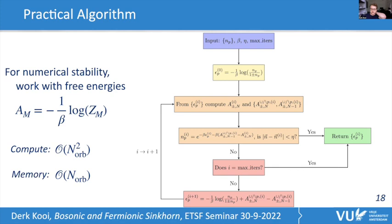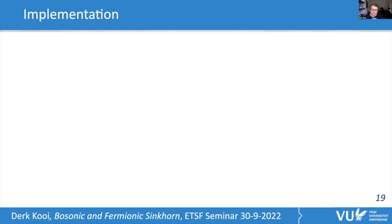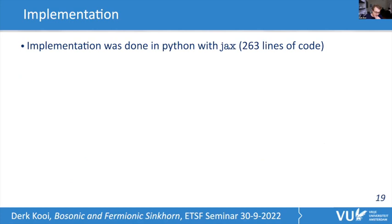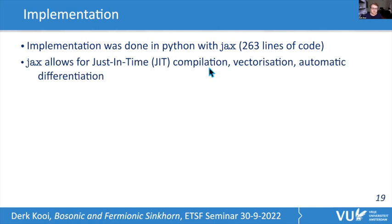For the remainder of the talk β = 1; as discussed this makes no difference to the non-interacting ensemble. Implementation was done in Python with JAX — a package from Google that allowed doing all inversions and partition function computations in only 263 lines of code. JAX enables just-in-time compilation for speed, single-line vectorization over all orbitals, and both forward and reverse mode automatic differentiation. The code works without modification on CPU, GPU, and TPU.